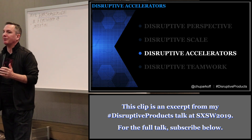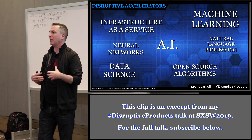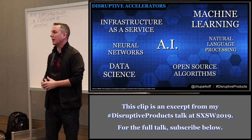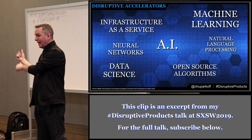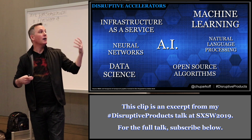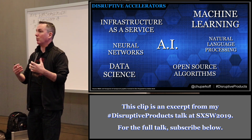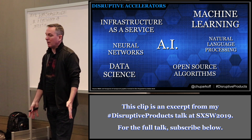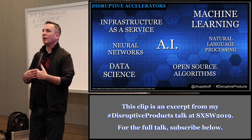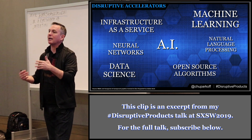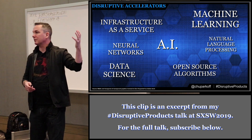Next we're going to talk about disruptive accelerators. Are you leveraging things like machine learning, natural language processing, infrastructure as a service? If you still have servers in a closet at your office, you're doing it wrong. Neural networks, open source algorithms, data science — all these things collectively are really important. If you're trying to start something brand new without leveraging all the work that's come before you, it's going to take a lot longer and you won't have time for your true focus.